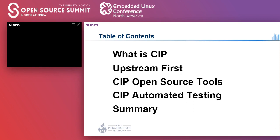CIP stands for Civil Infrastructure Platform. It was founded almost four years ago as a collaborative project under the Linux Foundation. CIP Kernel Team was first formed in 2016. Since then, the team has steadily worked and improved processes to sustain the infrastructure of civil platforms.